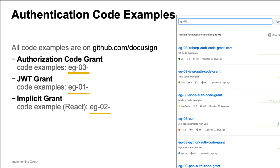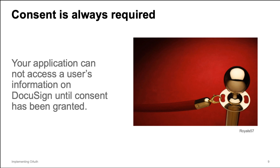Before you can use your integration key to obtain an access token, you must obtain consent from the user. The Authorization Code and Implicit Grant flows will obtain consent from the user for your application the first time the user authenticates with your application. These flows provide a smooth user experience. Obtaining consent for JWT applications is a bit more complicated, and I'll discuss the options in the forthcoming JWT Grant screencast.